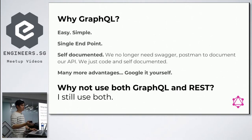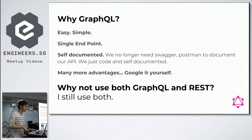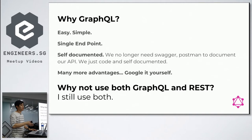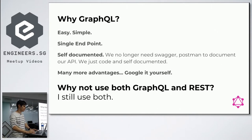So why not use both GraphQL and REST? In fact, I still use both. Most of my API — about 95% — is GraphQL right now. Maybe only 5% still uses REST, mainly for attachments, file uploads, and generation of PDFs. But anything related to data, I've been using almost 100% GraphQL.